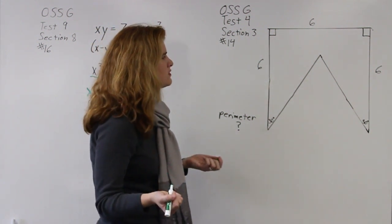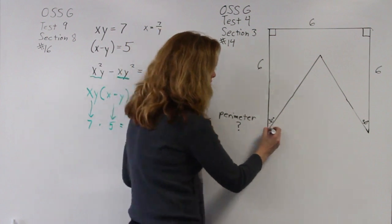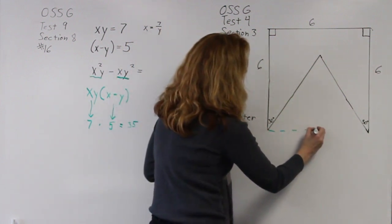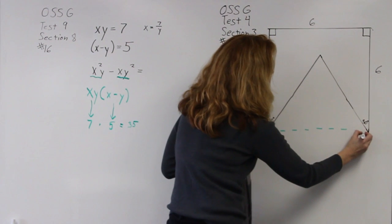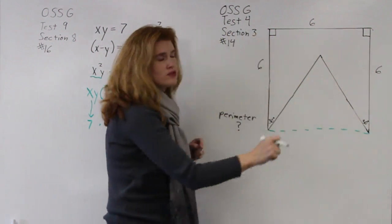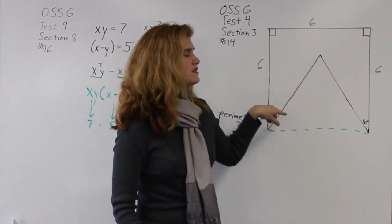So the first thing I'm going to do is I'm going to draw a dotted line because now what I've done is I've made a couple of recognizable shapes. I've made one large square and I've made a triangle inside of the square.